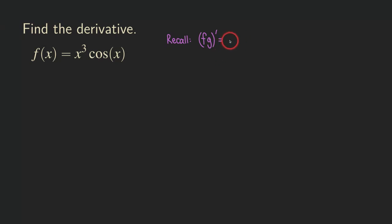What the product rule is saying is that we have f prime g. So we take the derivative of the first function and then times the second function without changing it, so we are just copying.